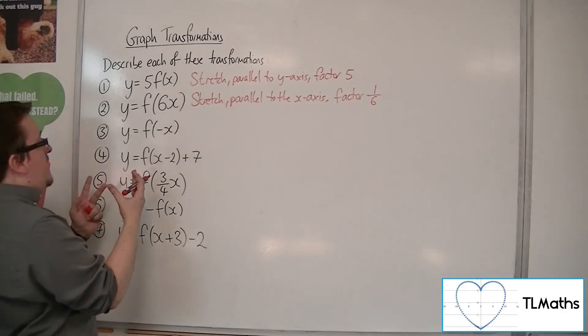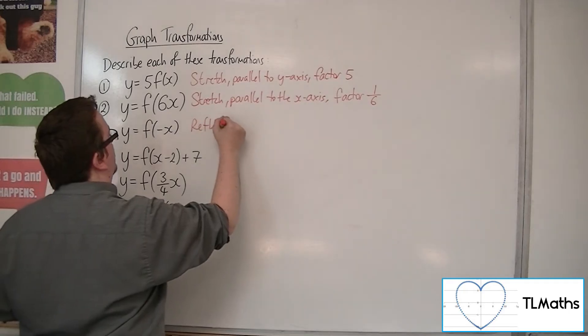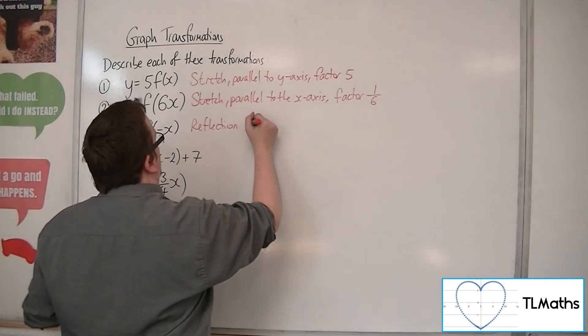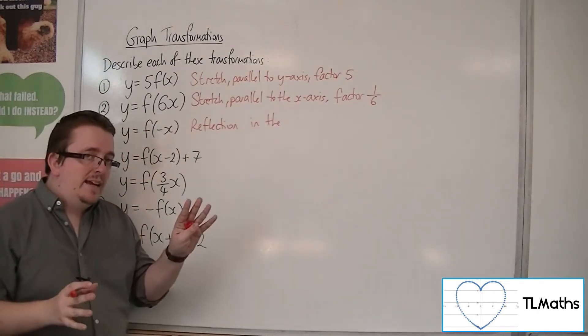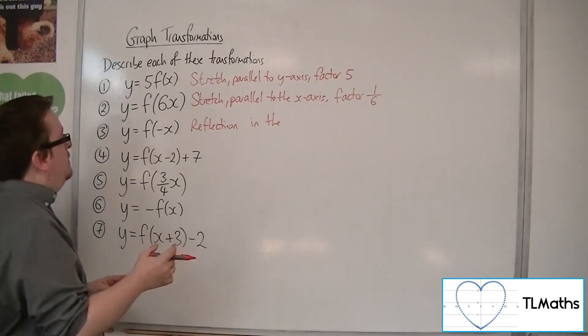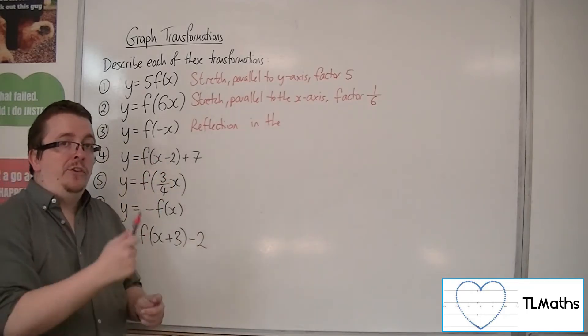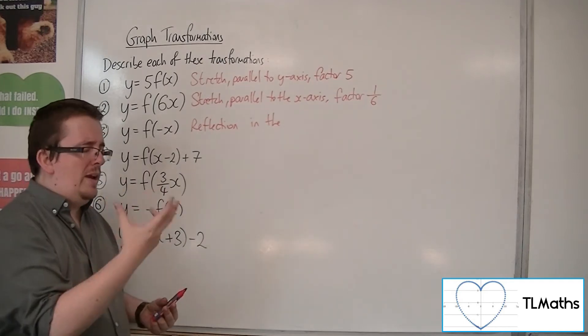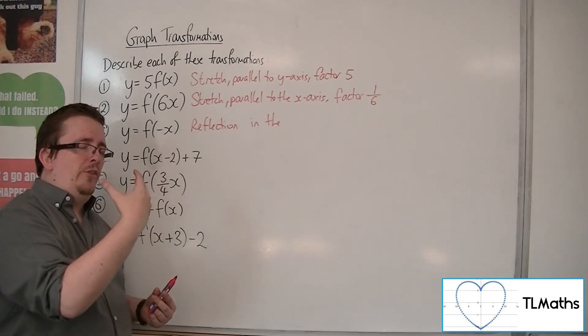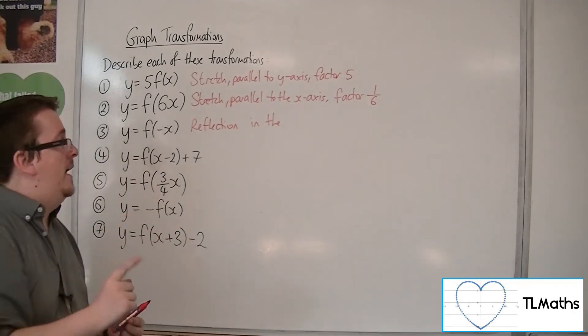For number three, this is a reflection. You need to determine which axis. Think: x has been transformed to minus x, the x has changed sign. If you visualize a point like 1, 3 being transformed to minus 1, 3, that's a reflection in the y-axis.